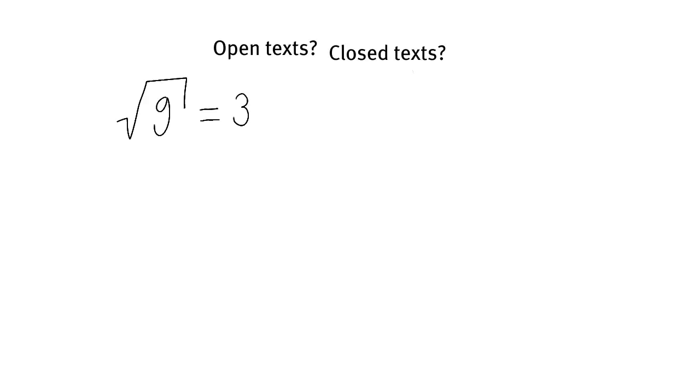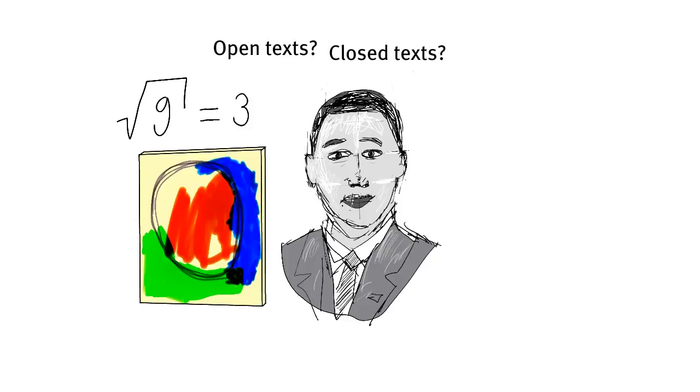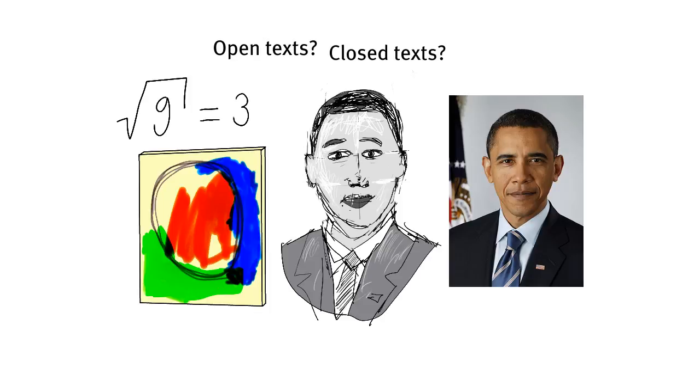A math formula is relatively closed, while an abstract painting is relatively open. Likewise, a painted portrait is considered more open than a photo portrait. But an abstract painting would be, in comparison, even more open. It's all relative.